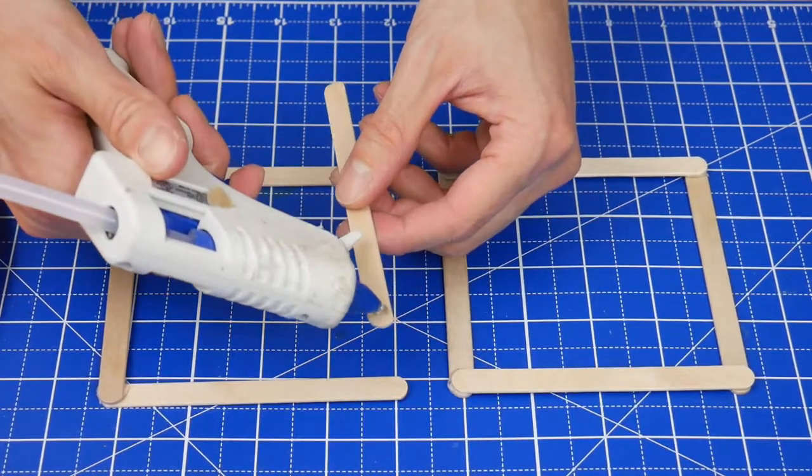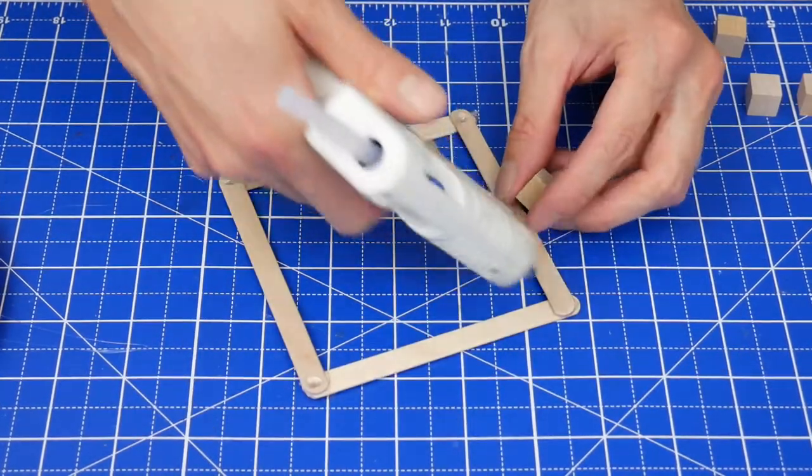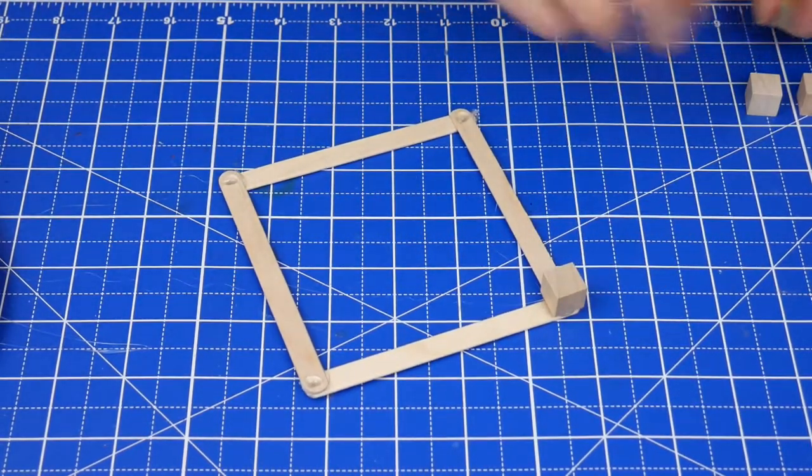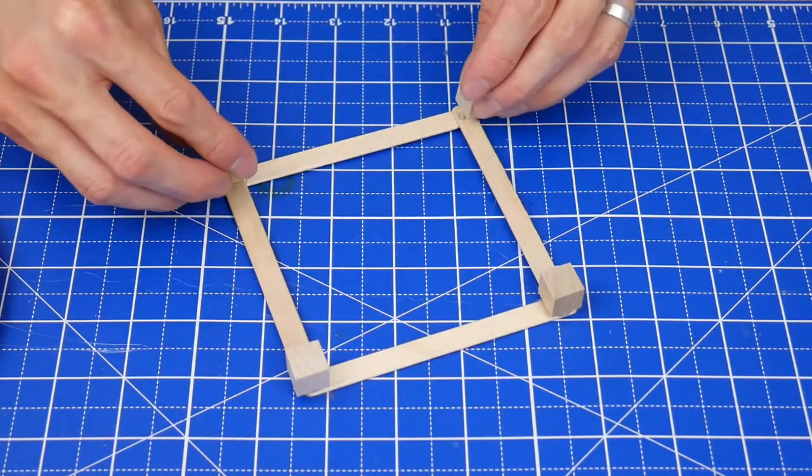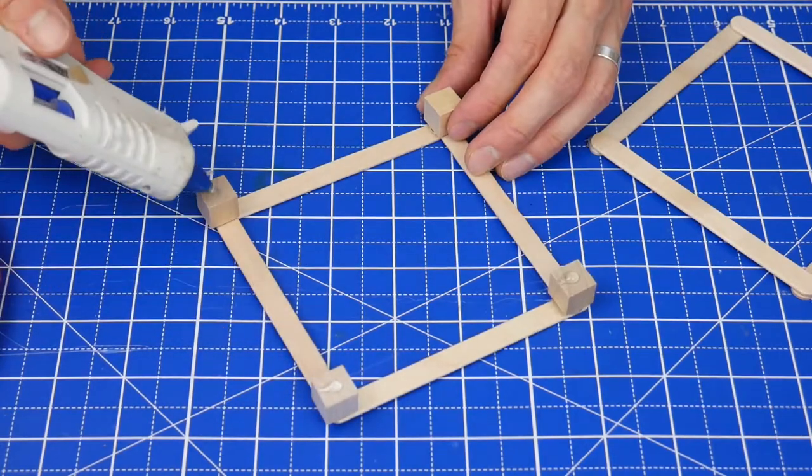The first step is to create two squares like this. Then glue four craft cubes into the corners of one square, and then glue the other square on top.